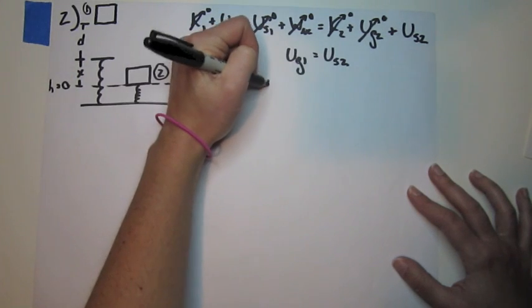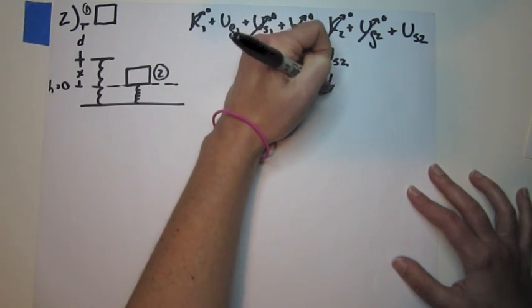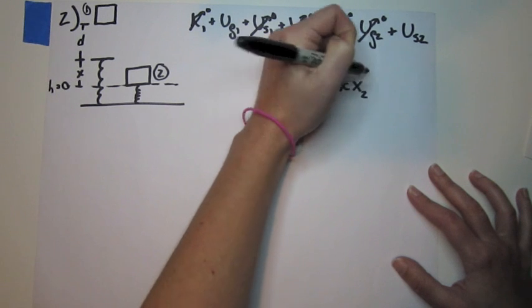Okay, so U_G1 is MGH₁. U_S2, potential energy in the spring, is ½KX² squared.